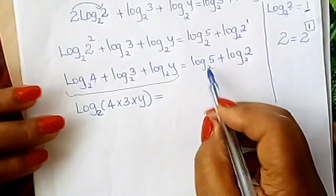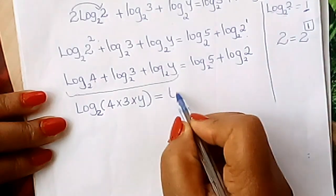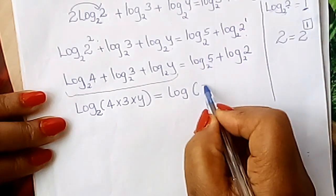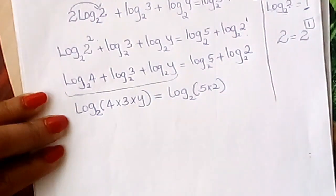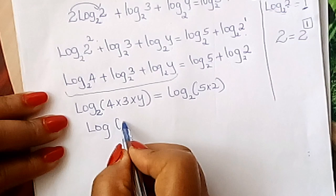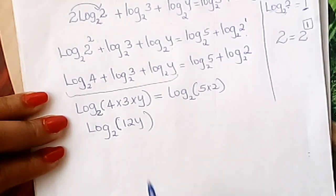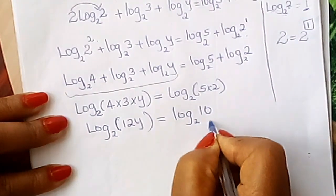So there we are. On this other side, you do the same. Log₂5 + log₂2. They are being added, so you write log, then you multiply these 2: 5 × 2, and it is to base 2. This is 12. 12y. Log₂(12y) = log₂10.